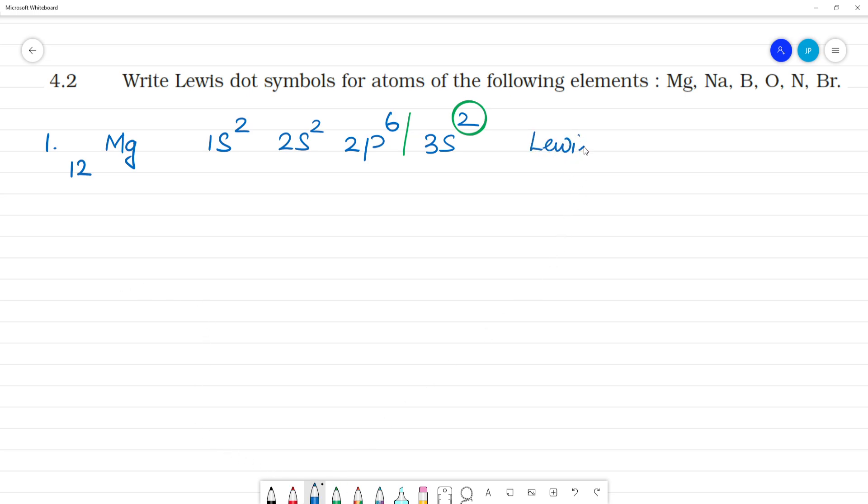This is the Lewis symbol. Lewis symbol is Mg with 2 electrons. Clear. Here we go, Mg with 2 electrons.